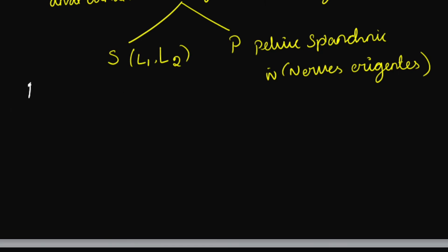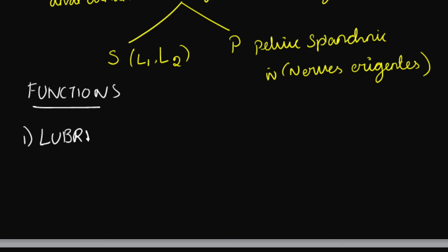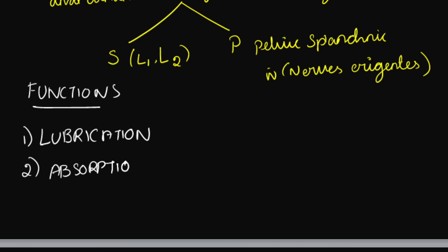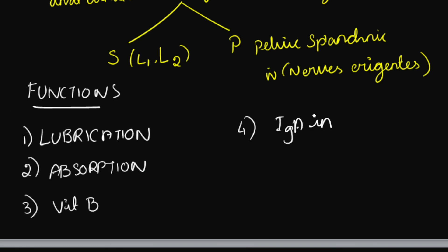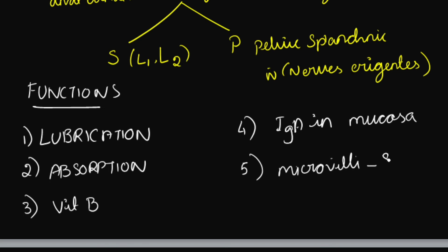The functions of the large intestine: first, lubrication — feces are lubricated with the help of mucus secreted by the goblet cells in the mucosal layer. Second, absorption of fluids, solutes, and nutrients. Third, vitamin B synthesis, which occurs through the bacterial flora present in the large intestine. Fourth, a large amount of IgA in the mucus secretion helps in protection against microorganisms. Fifth, microvilli present on the epithelial cells act in a sensory function.